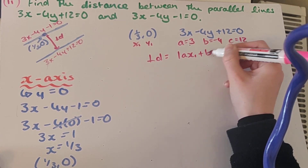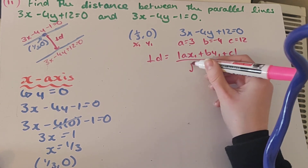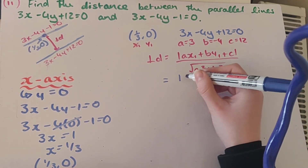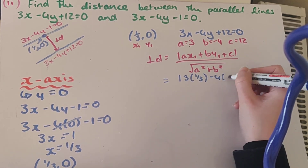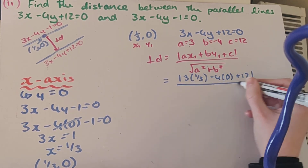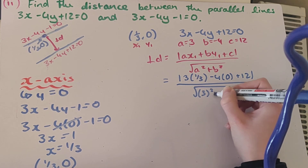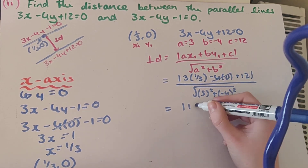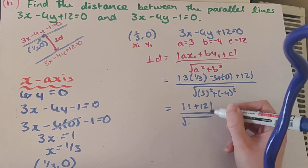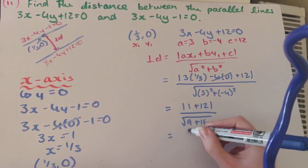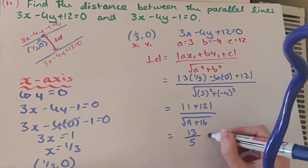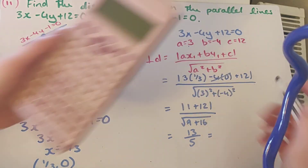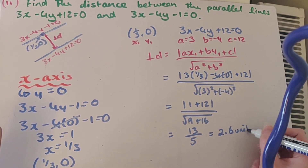Now applying the perpendicular distance formula: ax1 plus by1 plus c all over the square root of a squared plus b squared. Substituting: 3 times 1/3 minus 4 times 0 plus 12, all over the square root of 3 squared plus minus 4 squared. So 3 times 1/3 gives 1, minus 4 times 0 is gone, plus 12, all over the square root of 9 plus 16. That's 13 over the square root of 25 which is 5. So 13 over 5 gives 2.6 units as the perpendicular distance between those two parallel lines.